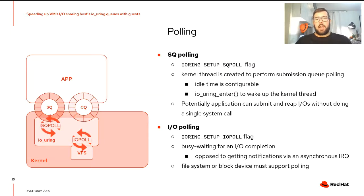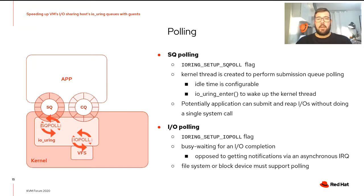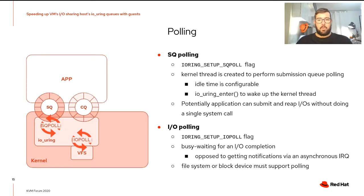Another cool feature provided by IOUring is polling. We have the possibility to enable SQ polling and IO polling. With SQ polling, a kernel thread is created to poll the submission queue, avoiding the need for a system call to pass control to the kernel. An idle time is configurable — if the kernel thread is idle longer than configured, it goes to sleep and the application must call IOUring enter with a special flag to wake it up. When enabled, the application can potentially submit and reap requests without doing a single system call. We can also enable IO polling, doing busy wait for I/O completion instead of waiting for an asynchronous notification such as an interrupt from the device. This feature can only be used if the device or filesystem supports block IO polling.